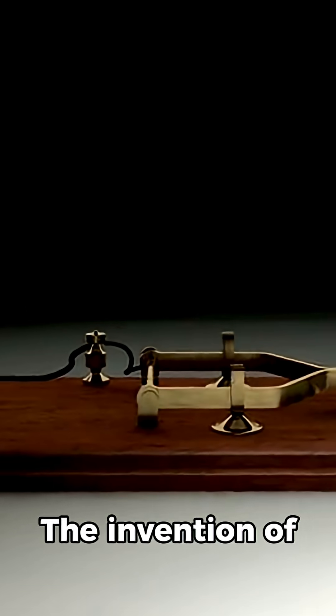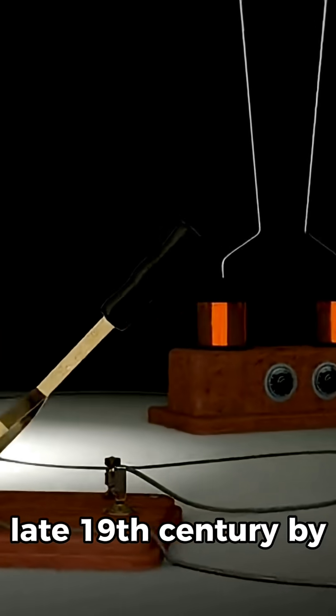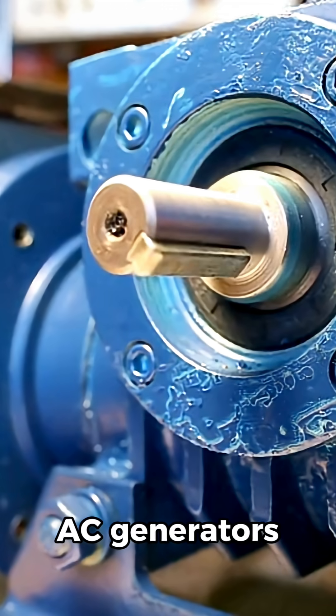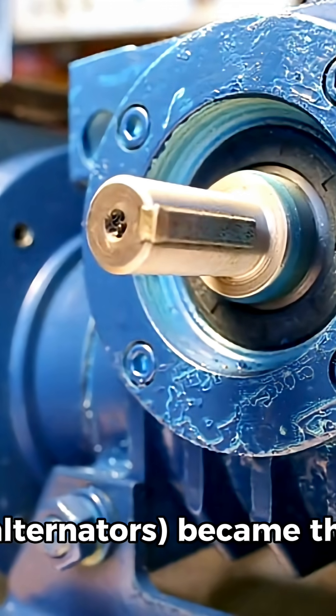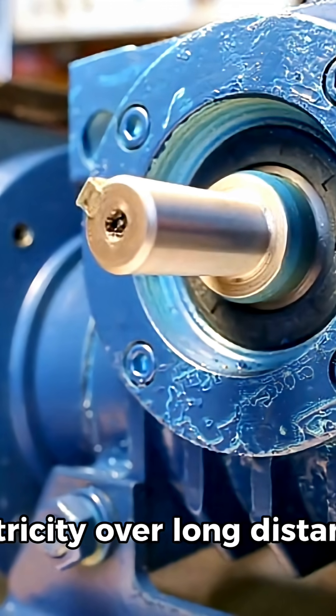The invention of alternating current AC systems in the late 19th century by pioneers like Nikola Tesla and George Westinghouse further revolutionized power generation. AC generators' alternators became the standard due to their ability to transmit electricity over long distances.